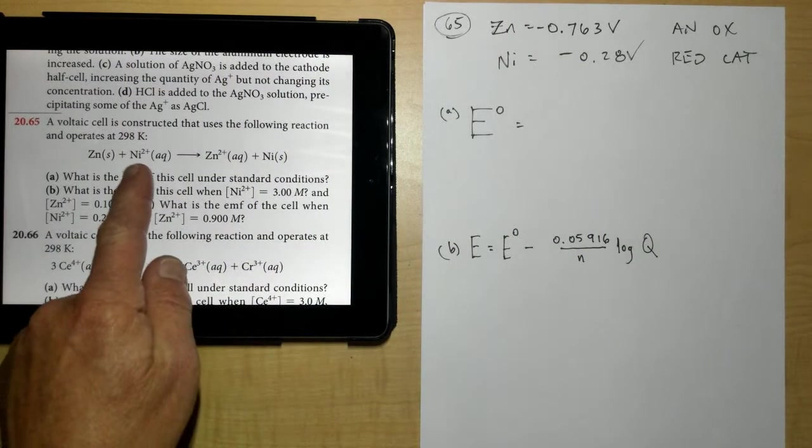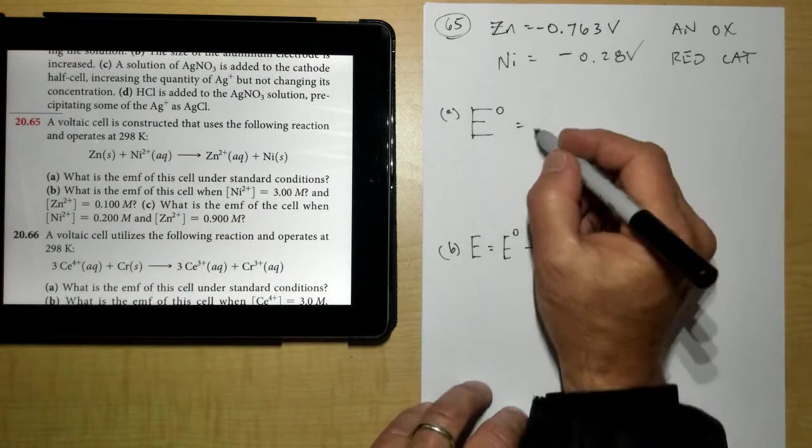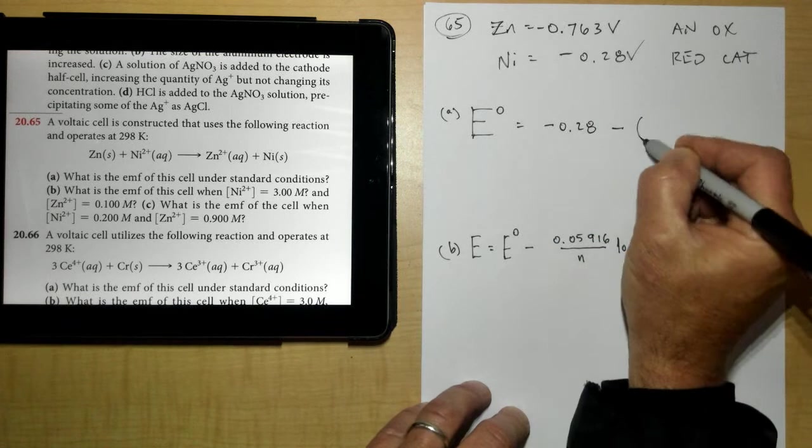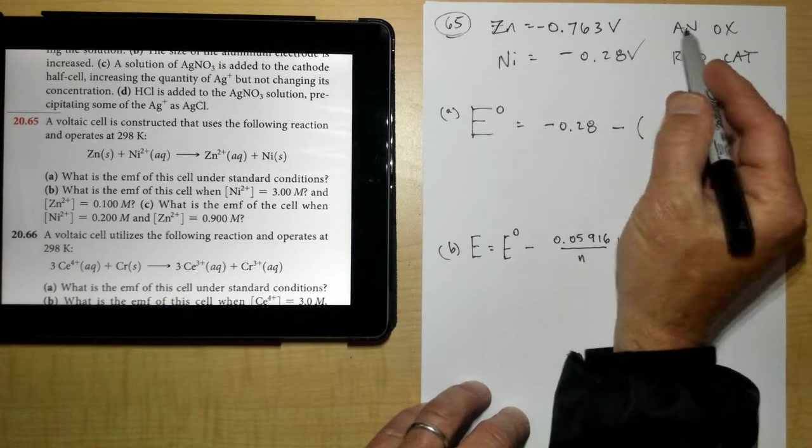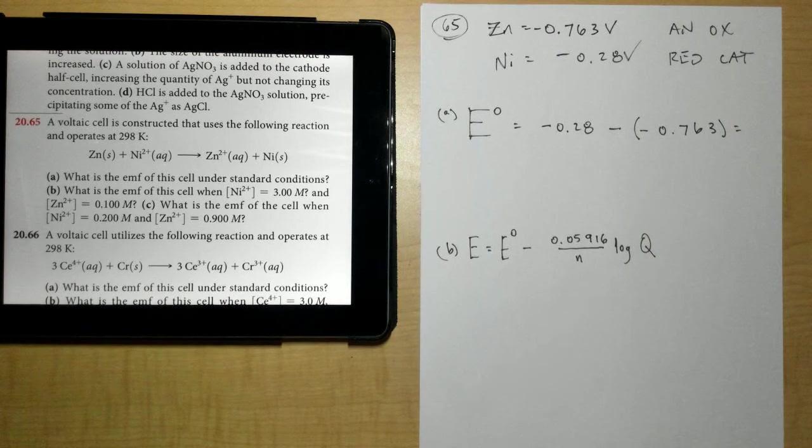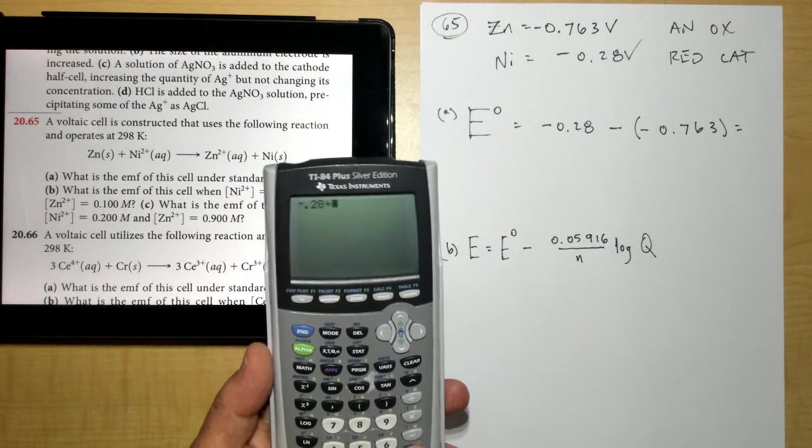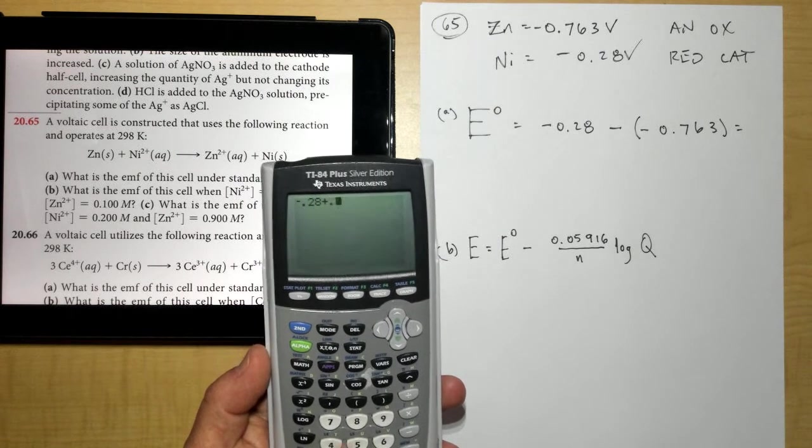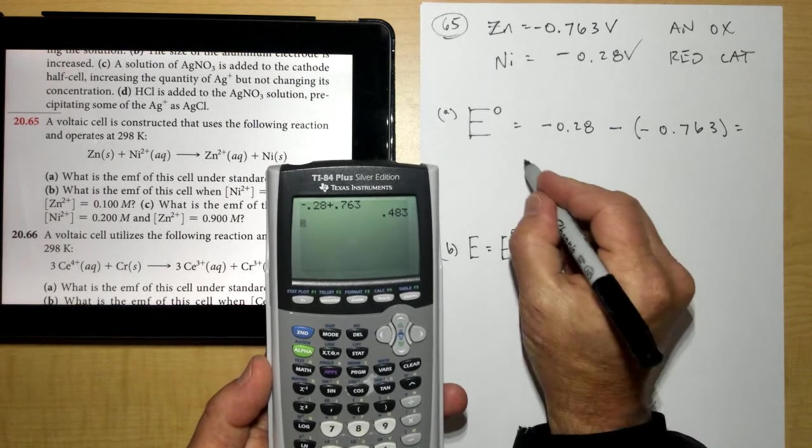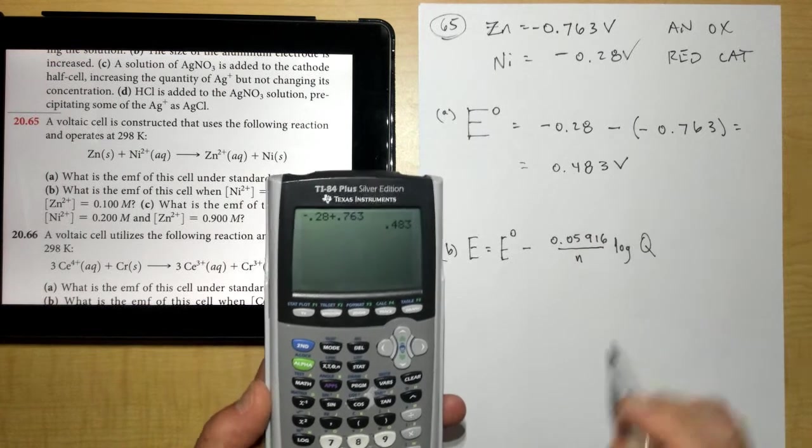And since the nickel right here is going from +2 to 0, that's being reduced. So that's my red cat. So -0.28 minus my oxidized anode, which is -0.763. So try that on my calculator here. I have -0.28 plus 0.763. Hit enter.